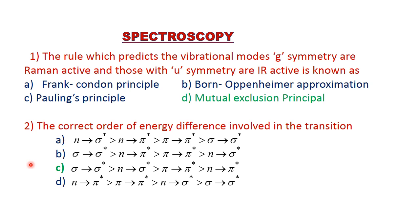Welcome to this program. Today, we are going to discuss important questions in UV, ESR, mass, and Raman spectroscopy. Question number one: the rule which predicts the vibrational modes — the rule of mutual symmetry (G symmetry) — that principle is known as the mutual exclusion principle.